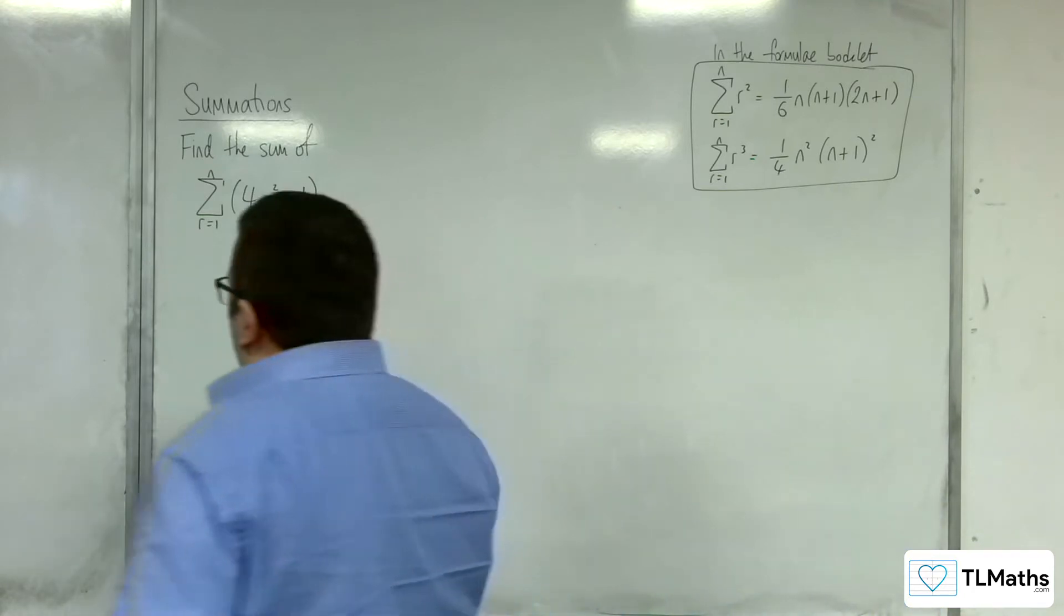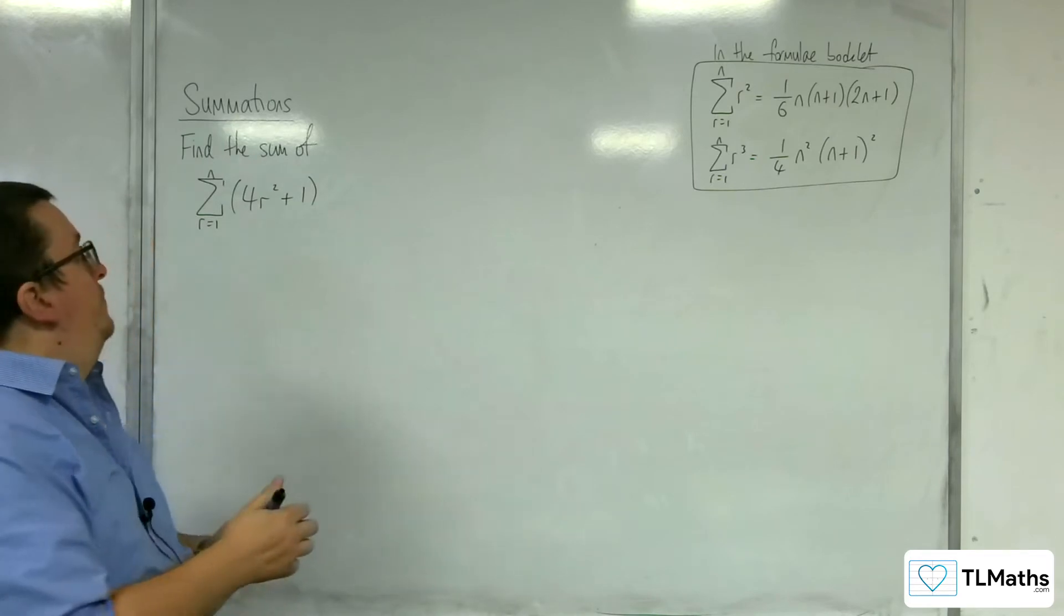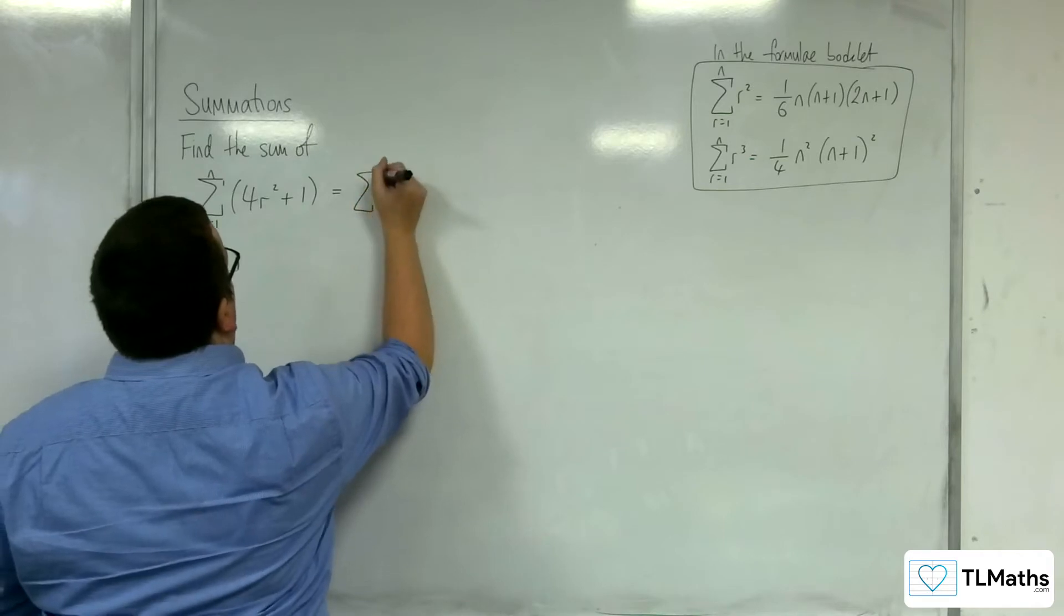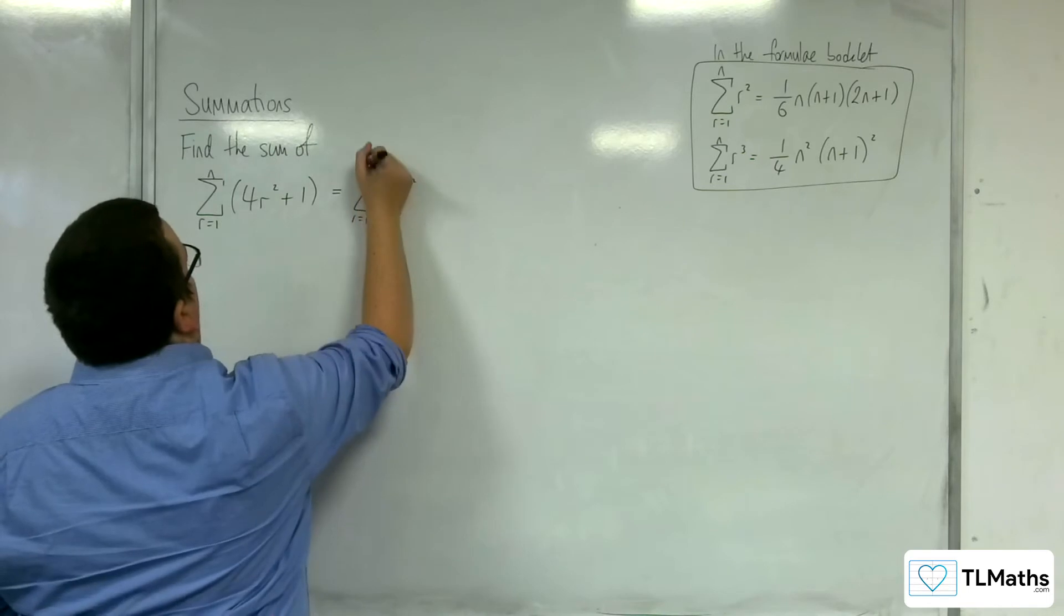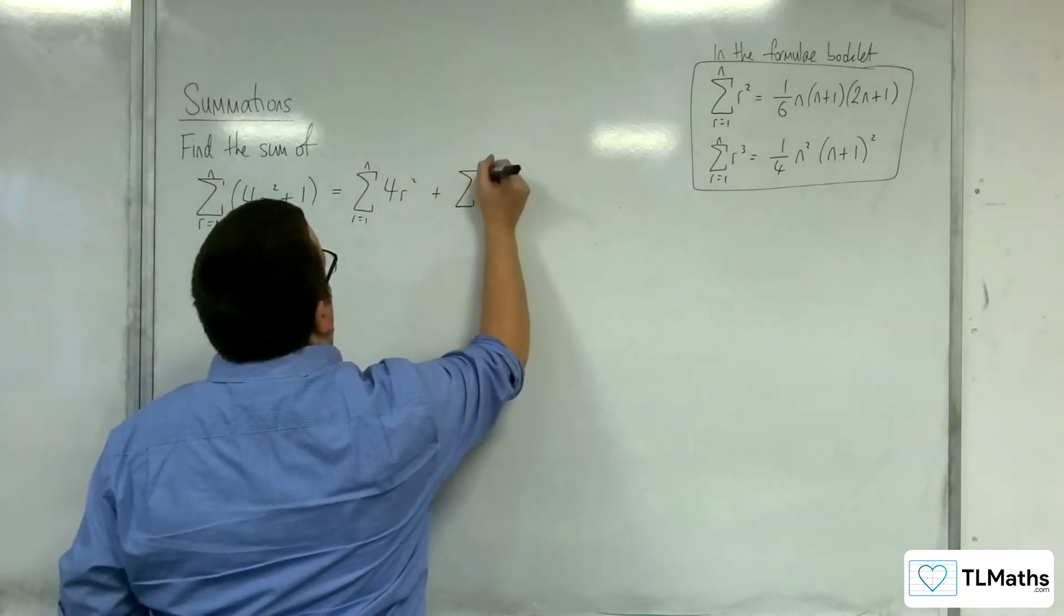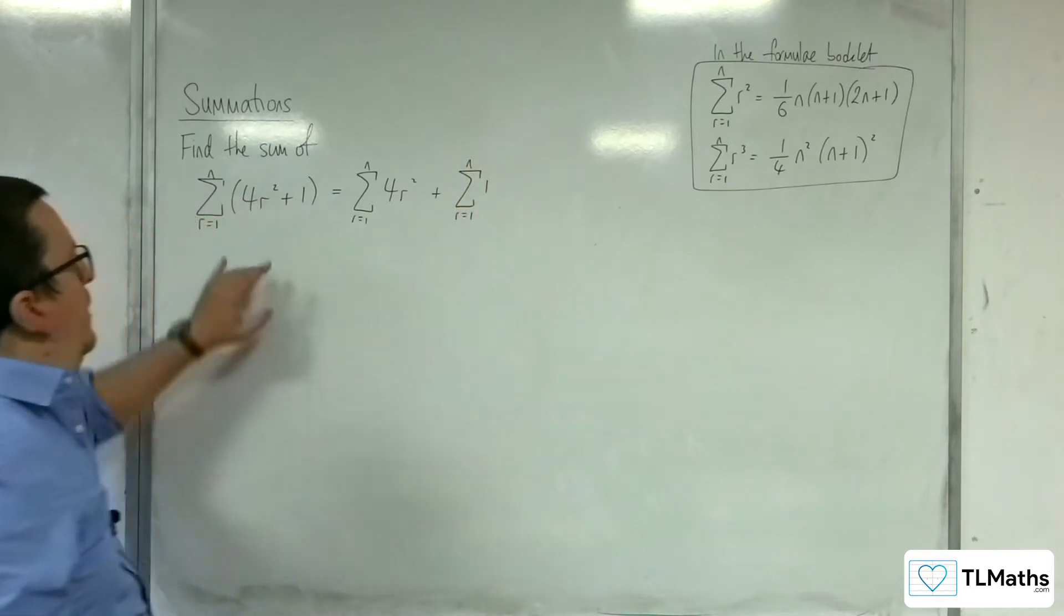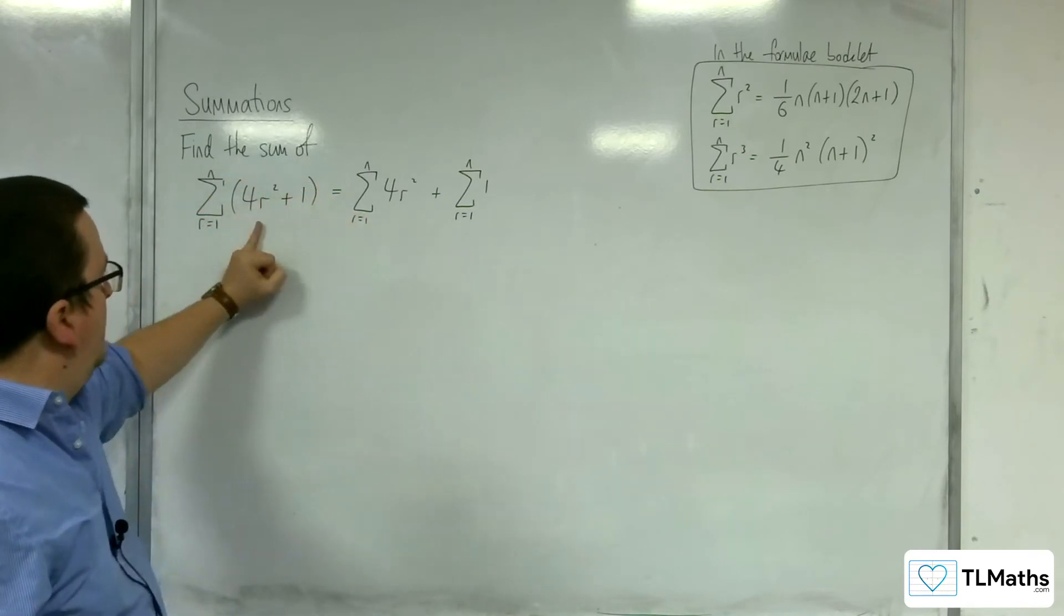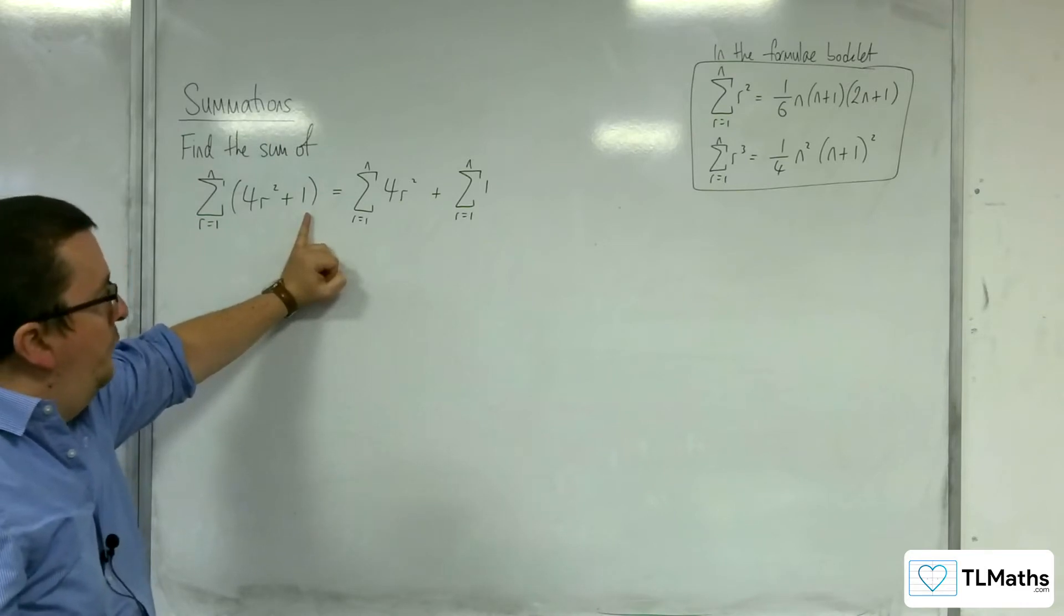What you need to know is that we can split the summation up. So the first thing is we can split the summation up into the sum of 4r squared from r is 1 to n plus the summation of 1 from r is 1 to n. So effectively you can break the bracket apart and look at the sum of this term plus the sum of that term. That's the first thing that we're going to do.